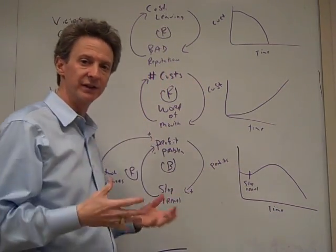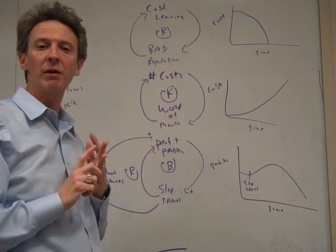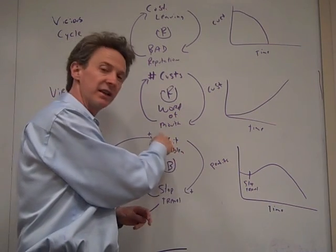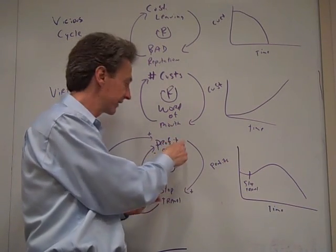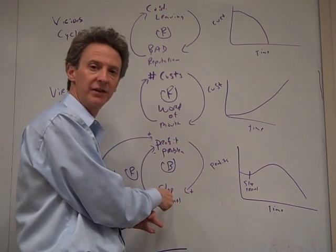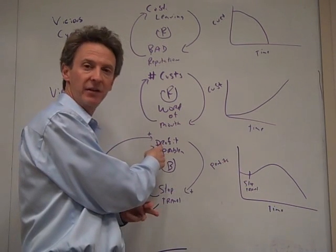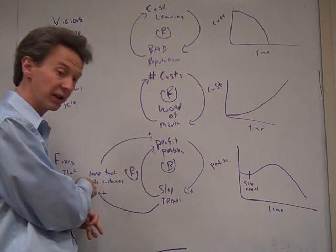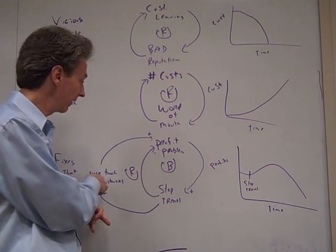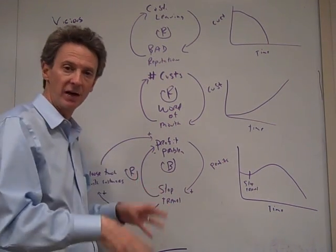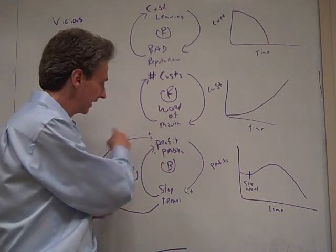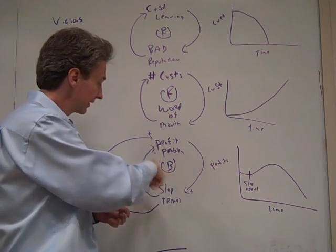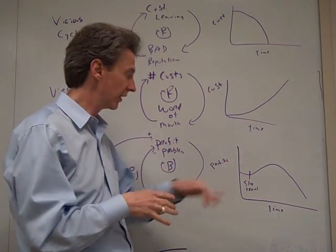And then the third one we talked about were fixes that fail. For instance, you have a problem in your profits. So, you stop traveling to save some money. And that helps fix the profit problem. But inadvertently, over a longer period of time, you start to lose touch with customers because you're not traveling. And you start to build the wrong products and those sorts of things. And so, you end up with an even larger profit problem. So, it's a fix that ended up failing in the long run.